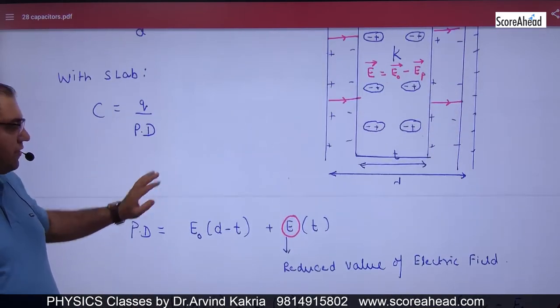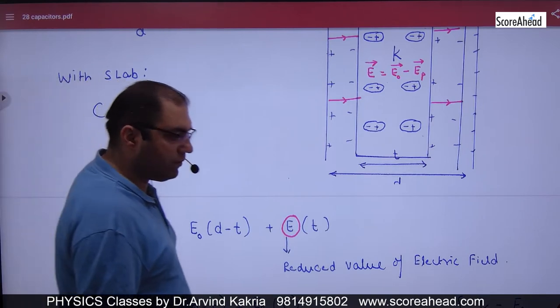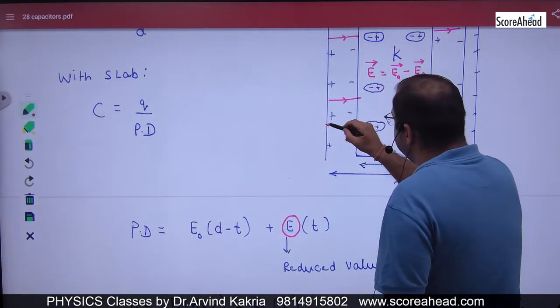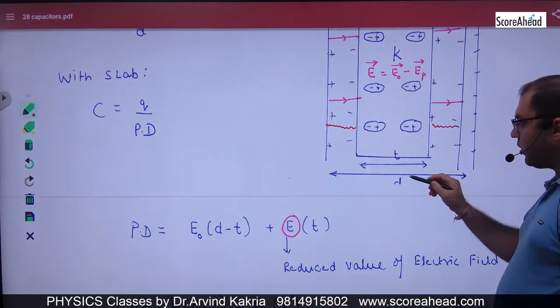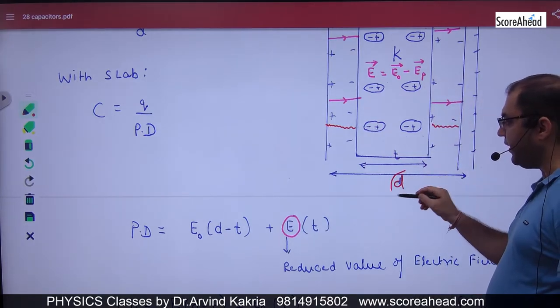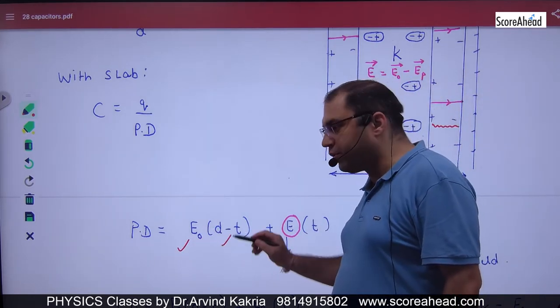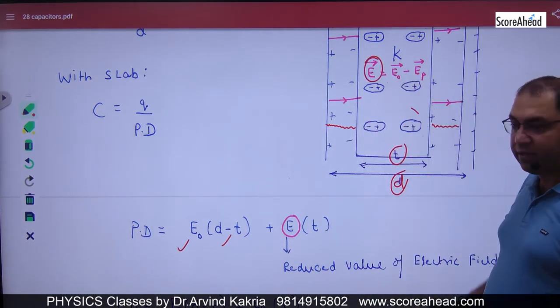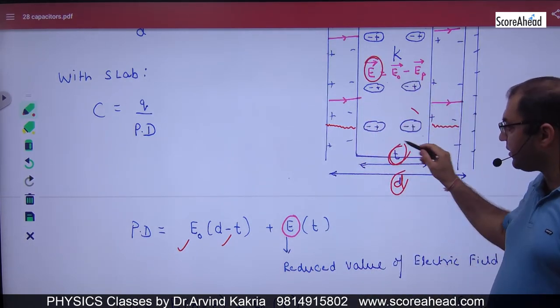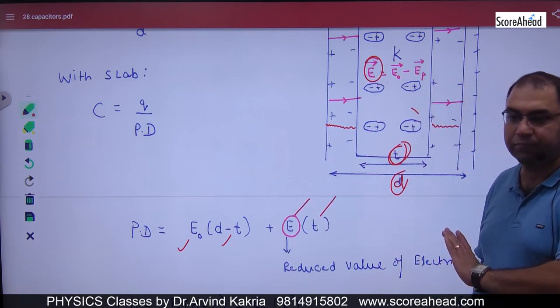What is the potential difference? In this region, what is the electric field? E0. And what is the thickness of this region? D minus T. So the electric potential difference is E0 into D minus T. And here, the net field is E, and the thickness is T. The potential difference is E into T.